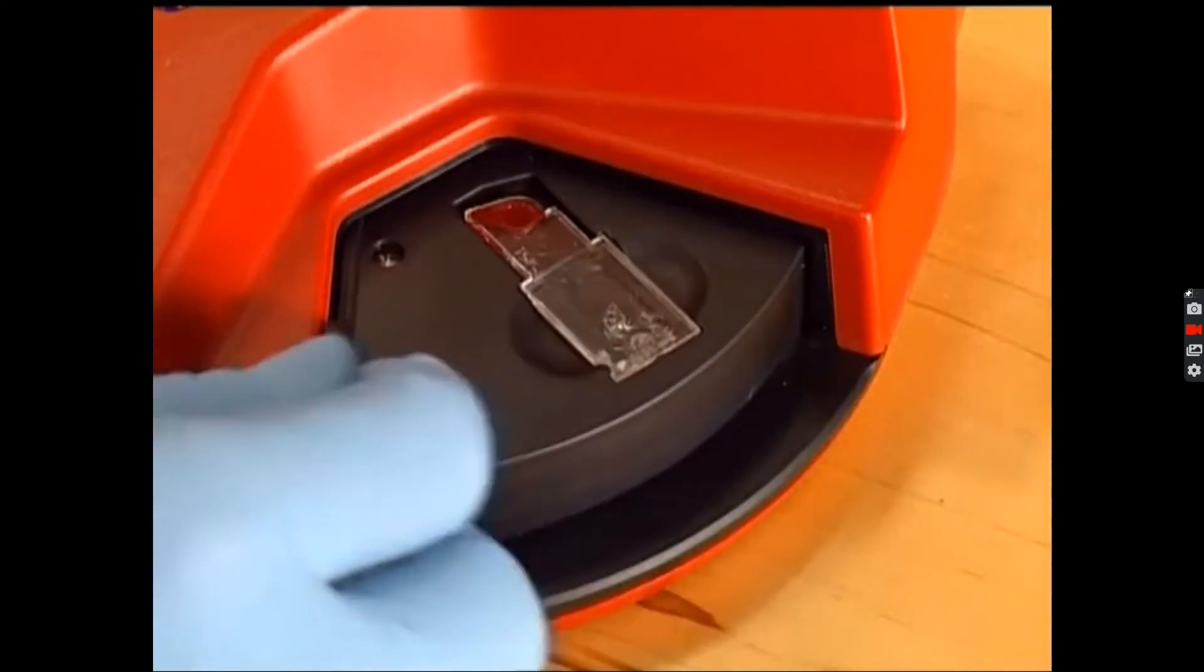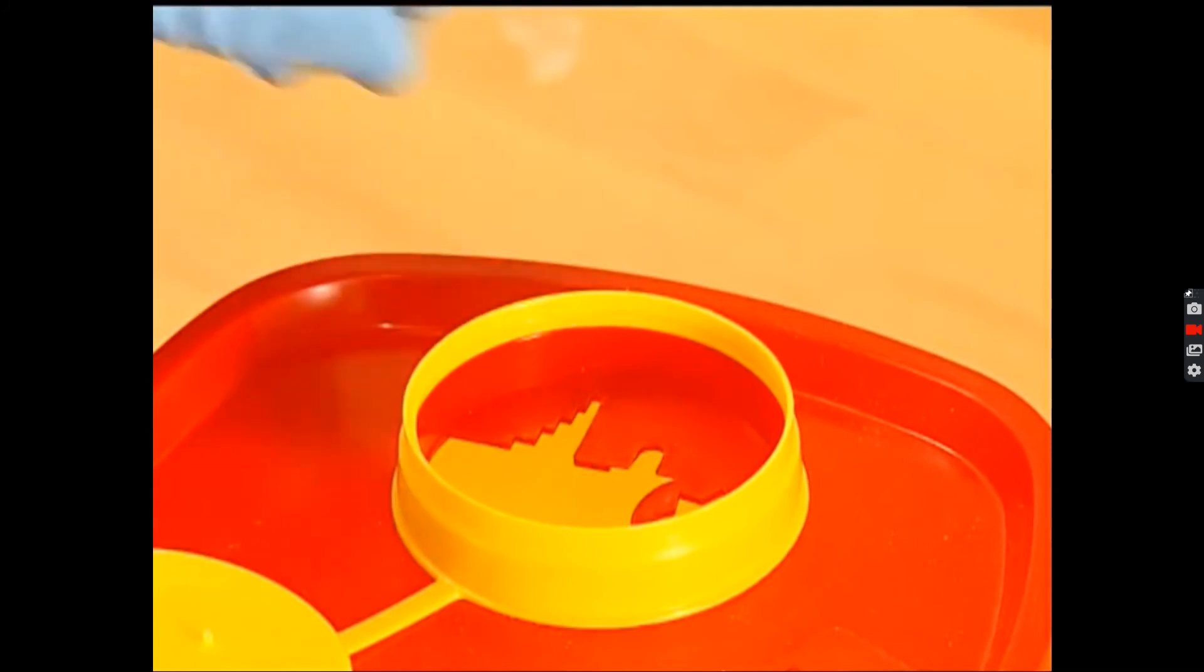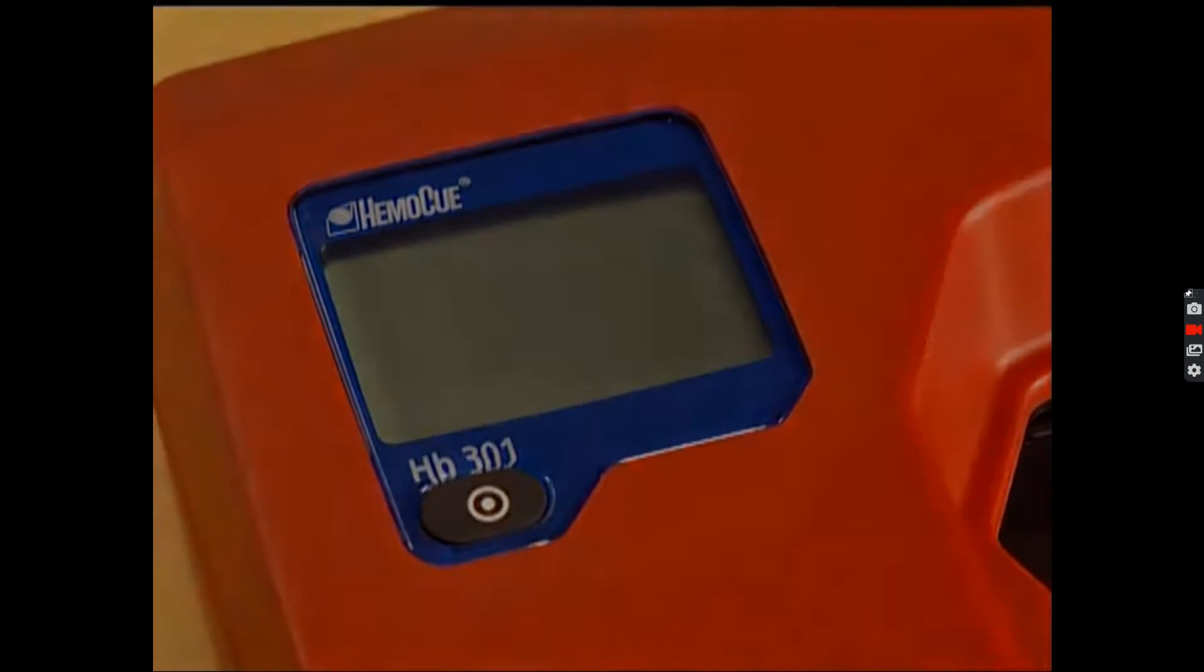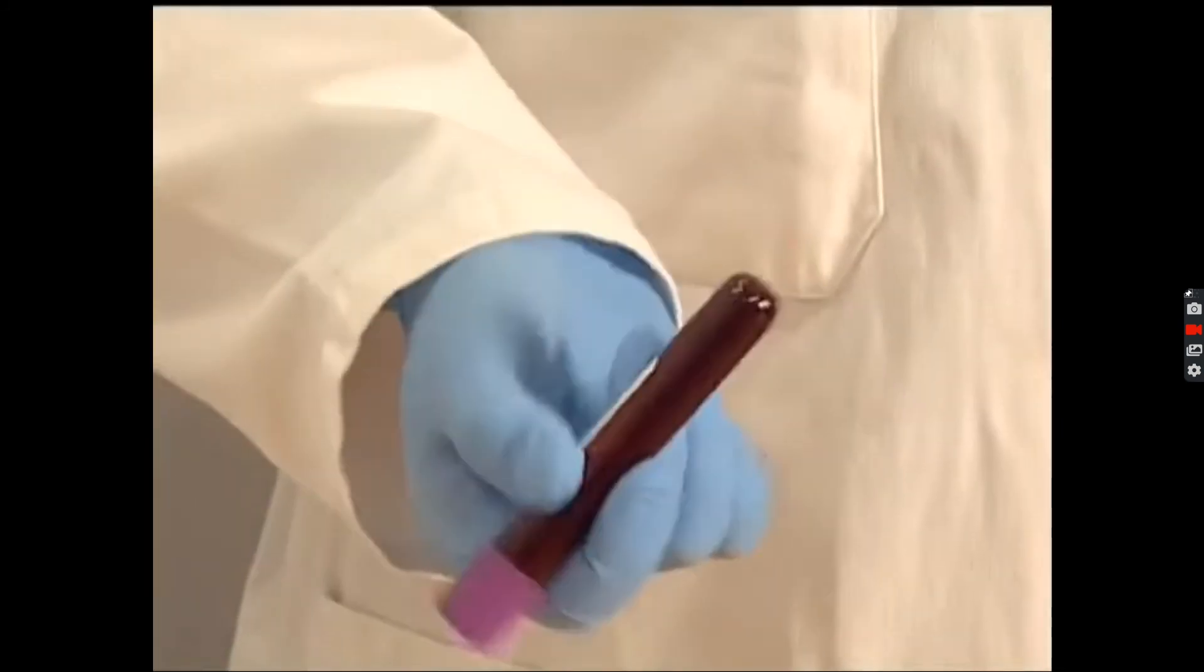Kindly note that the microcuvette can only be entered in one orientation into the machine. Remove the microcuvette and dispose of it as a biohazardous item, and switch the HemoQ off. This is basically done.